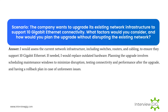The company wants to upgrade its existing network infrastructure to support 10 Gigabit Ethernet connectivity. What factors would you consider, and how would you plan the upgrade without disrupting the existing network? I would assess the current network infrastructure, including switches, routers, and cabling, to ensure they support 10 Gigabit Ethernet. If needed, I would replace outdated hardware. Planning the upgrade involves scheduling maintenance windows to minimize disruption, testing connectivity and performance after the upgrade, and having a rollback plan in case of unforeseen issues.